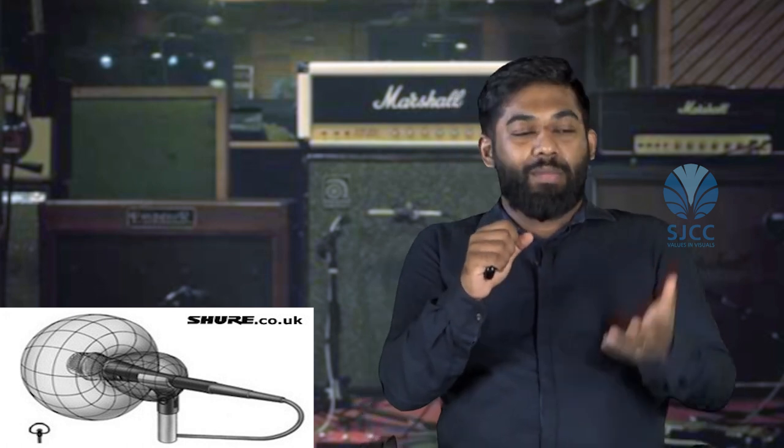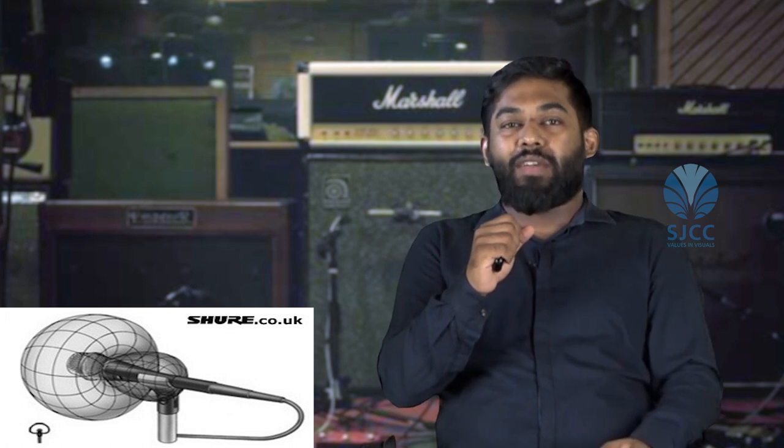Supercardioid microphones have a narrower pickup pattern than cardioid microphones — that is, they reject sound from the sides more than the cardioid. But unlike the cardioid microphone, the supercardioid has a small pickup pattern at the rear. So if a singer were to use a supercardioid microphone, he would have to maintain a constant position right in front of the mic.